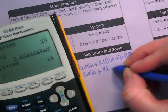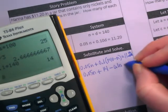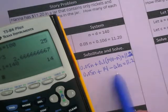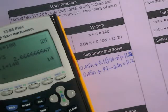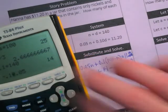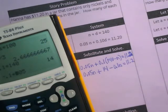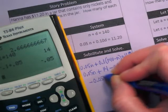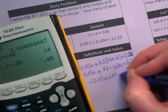Plus 14 minus 0.1N equals 11.20. I need to combine like terms. I need to combine the two terms that have the N attached. I have 0.05 and negative 0.1. Negative 0.1 minus 0.05. What are we going to get? Oops, I didn't mean minus. I meant plus.